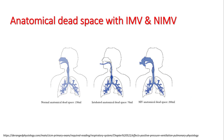Anatomical dead space can vary with mechanical ventilation. When you intubate somebody, you remove a portion of the anatomical dead space, as the tube is much thinner than the upper airway. Intubated anatomical dead space after intubation is only 70 ml compared to 150 ml. If you put somebody on non-invasive ventilation, you add the volume of the mask to the dead space, and anatomical dead space becomes 200 cc.